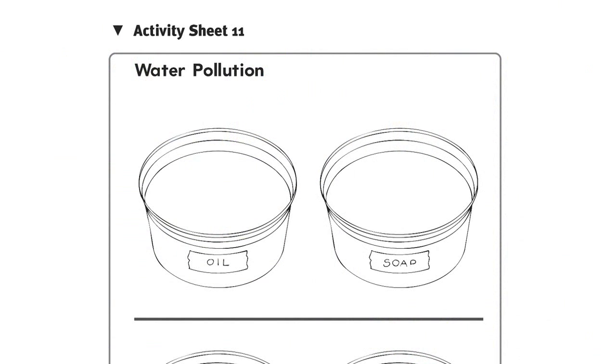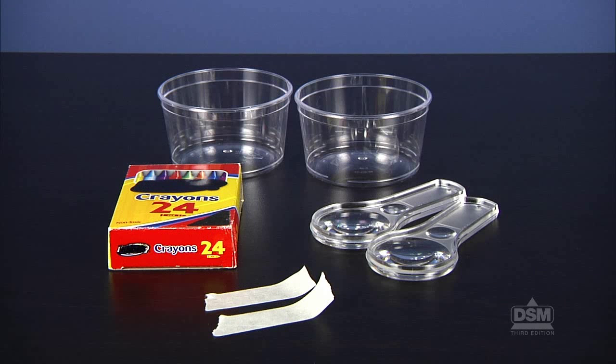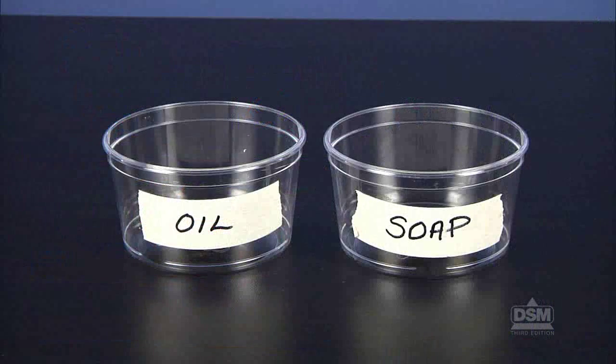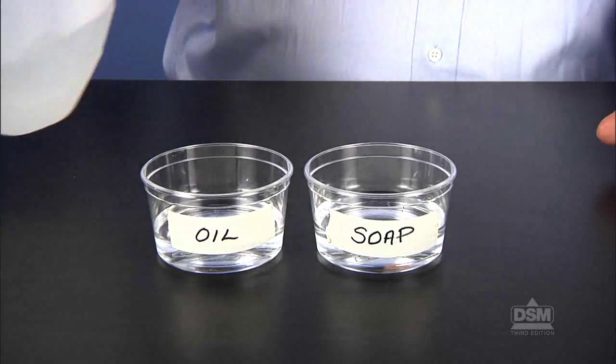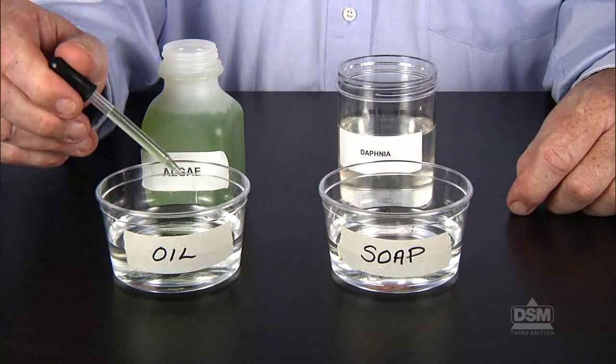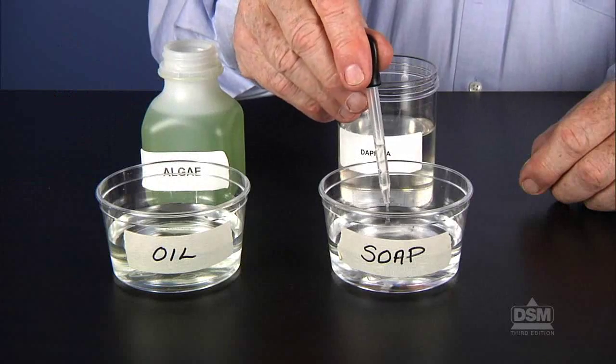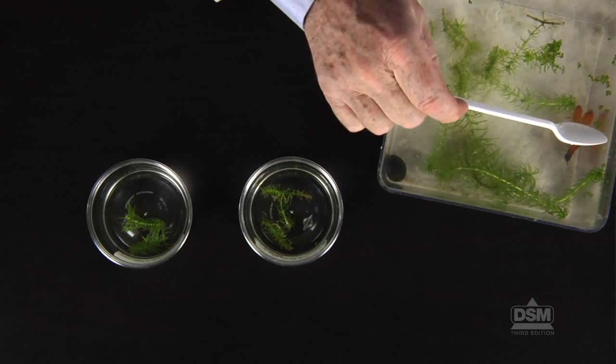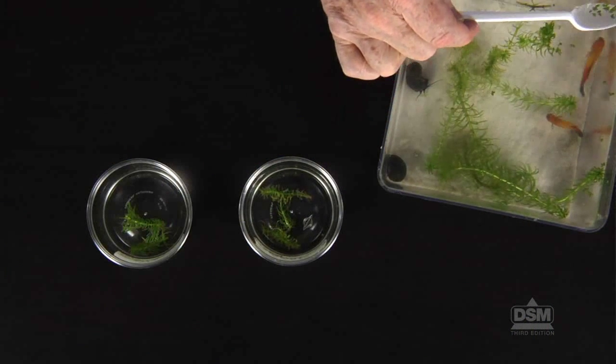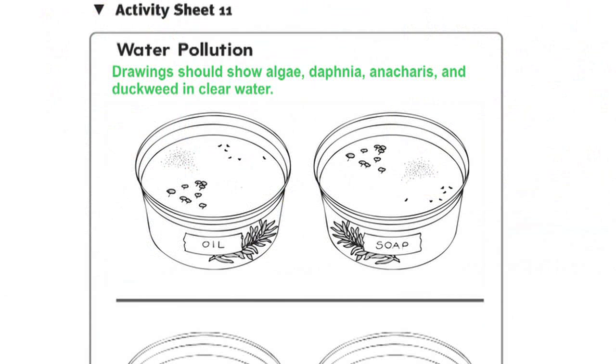Next, distribute a copy of Activity Sheet 11 to each student and the materials plus two pieces of tape to each team of four. Instruct students to label their dishes oil and soap. Have students half fill their dishes with spring water. Then have them add several dropperfuls of algae and a dropperful of daphnia to each dish. Next, tell them to break off two sprigs of anacharis from their aquariums and place one in each dish along with a small amount of duckweed plants. Have them draw what they see in their dishes in the top box on Activity Sheet 11.